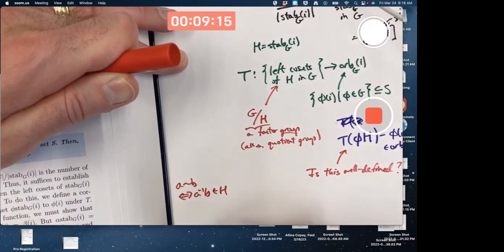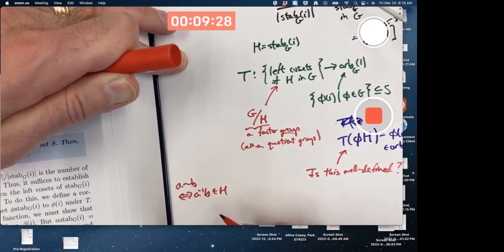we saw last week. No, that was spring break. Monday? But that was an equivalence relation on G. It was reflexive, symmetric, and transitive.